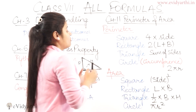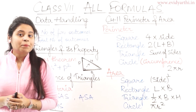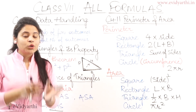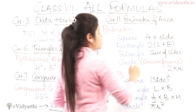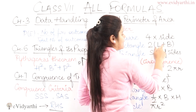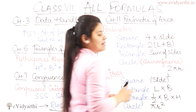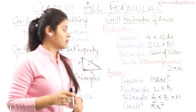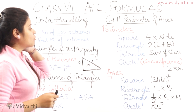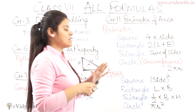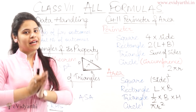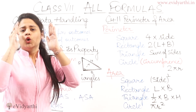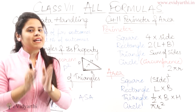Then we have rectangle — rectangle's perimeter is 2(L + B), where L is the length and B is the breadth. Then we have triangle — if you have the perimeter of a triangle, simply add the three sides.